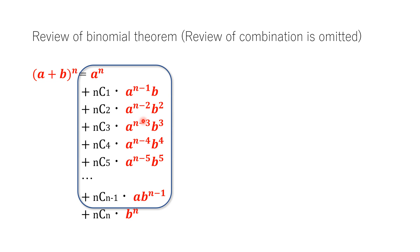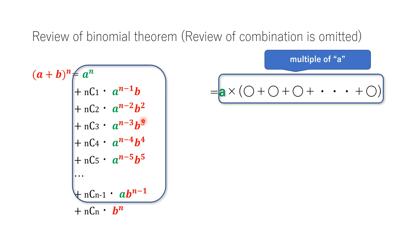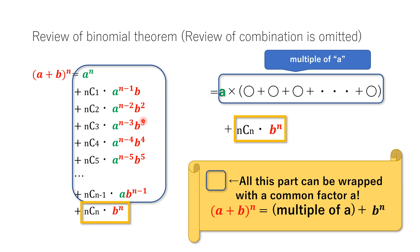This part is so important because all of them are multiples of A. So we can interpret this long equation as two parts: one is a large multiple of A, and the other is the orange part B to N. To summarize, you can wrap this part with the common factor A, and this equation holds. Please remember this important formula.